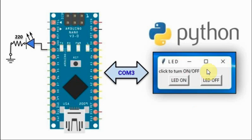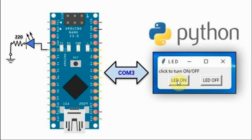In this first example, we want to design a simple Python GUI which will have a window title 'LED', a label 'click to turn on/off', and two buttons — one to turn on the LED and the other to turn off the LED.